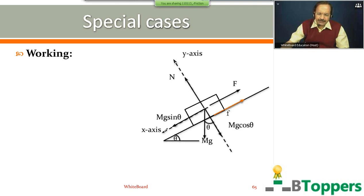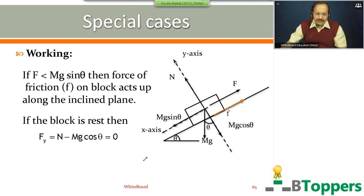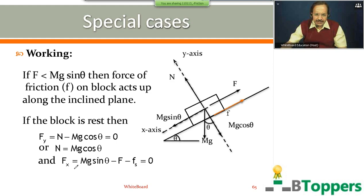I take the direction parallel to the inclined surface, down the incline, as the positive x-axis and perpendicular to the inclined surface as the y-axis. If F is less than mg sin θ, friction on the block acts up along the inclined plane. Small fs represents the magnitude of static friction acting up along the inclined surface. Since the block is at rest, the resultant force is zero: Fy equals N minus mg cos θ equals zero, so N equals mg cos θ. Also, Fx equals mg sin θ minus F minus Fs equals zero, giving Fs equal to mg sin θ minus F.